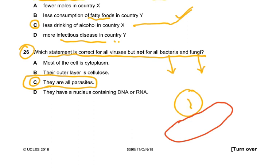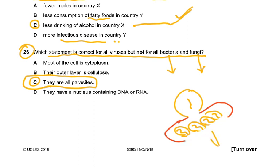A virus has to live on another host cell — it injects its DNA, invades the host cell, asks it to make copies of its DNA and its protein coat, then destroys the host cell and virus particles are released. Viruses are non-cellular, have no cytoplasm, only either a DNA or RNA strand, and do not have a nucleus. They are very, very tiny.